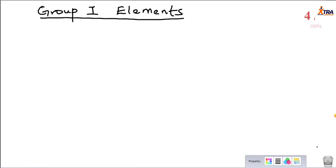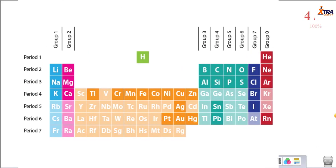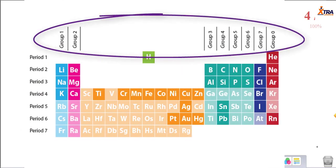Welcome. In this lecture I want to discuss the group 1 elements of the periodic table. Remember, a group is a vertical column on the periodic table, and elements in the same group are placed there because they have the same number of outermost electrons. The periodic table has 8 groups in one category.